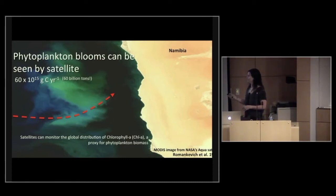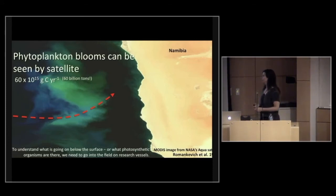These satellite images can monitor the global distribution of, for example, this pigment, which is chlorophyll A, as a proxy for us to look at phytoplankton biomass. But to understand what's going on below the surface, we can't use satellites anymore. Above the surface, we've got really great satellite imagery of phytoplankton blooms occurring all over the globe. But if we wanted to get 20 to 30 meters down to understand what processes are going on, we can't use satellite imagery. In addition, if we wanted to know what phytoplankton species were blooming, we can't use satellite imagery. So we need to go on to research vessels.